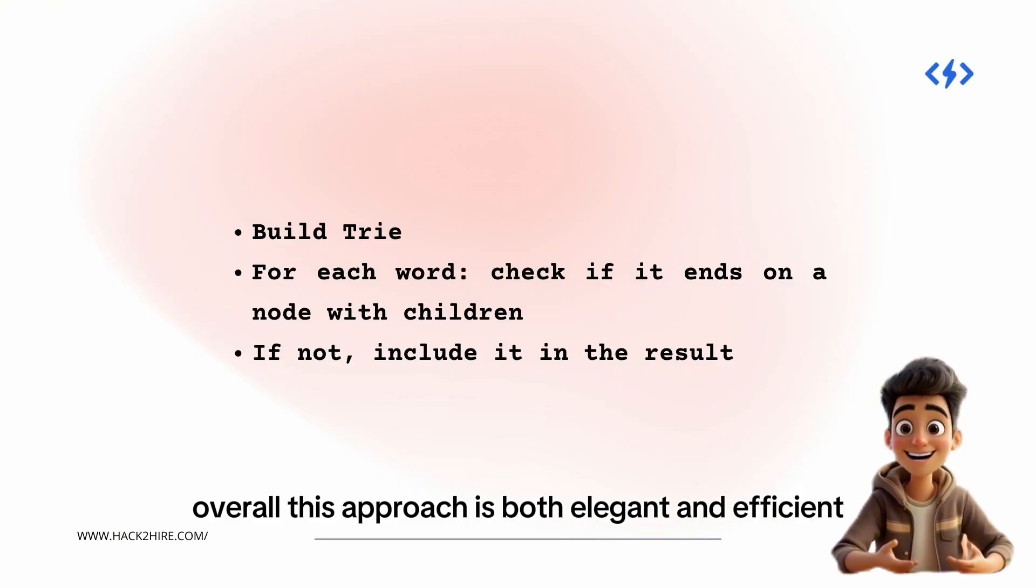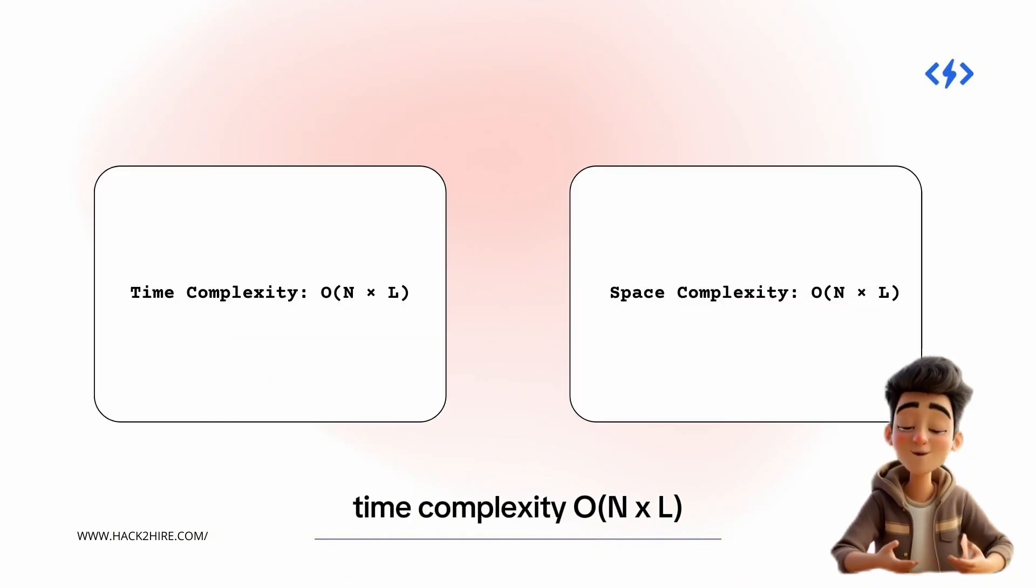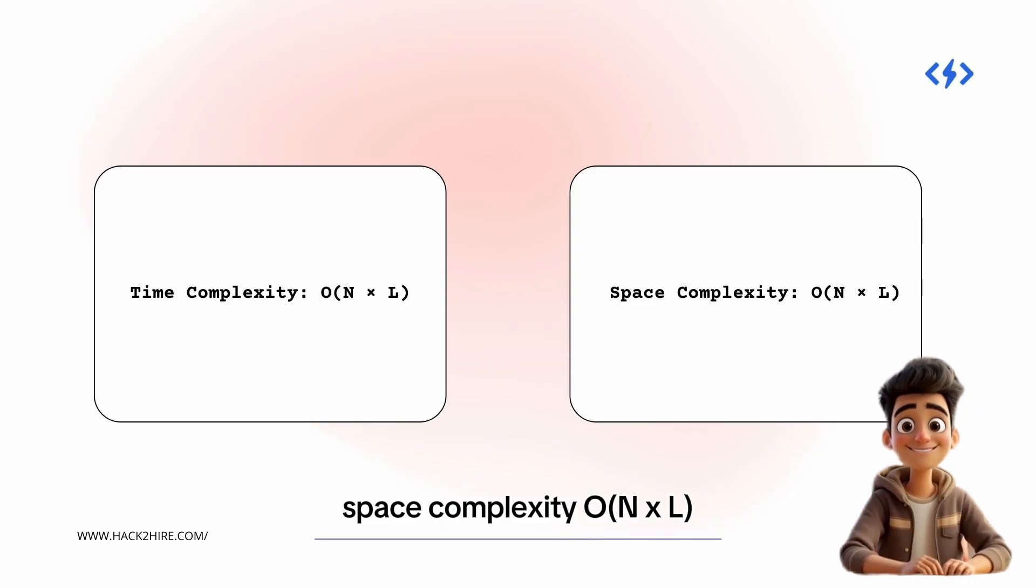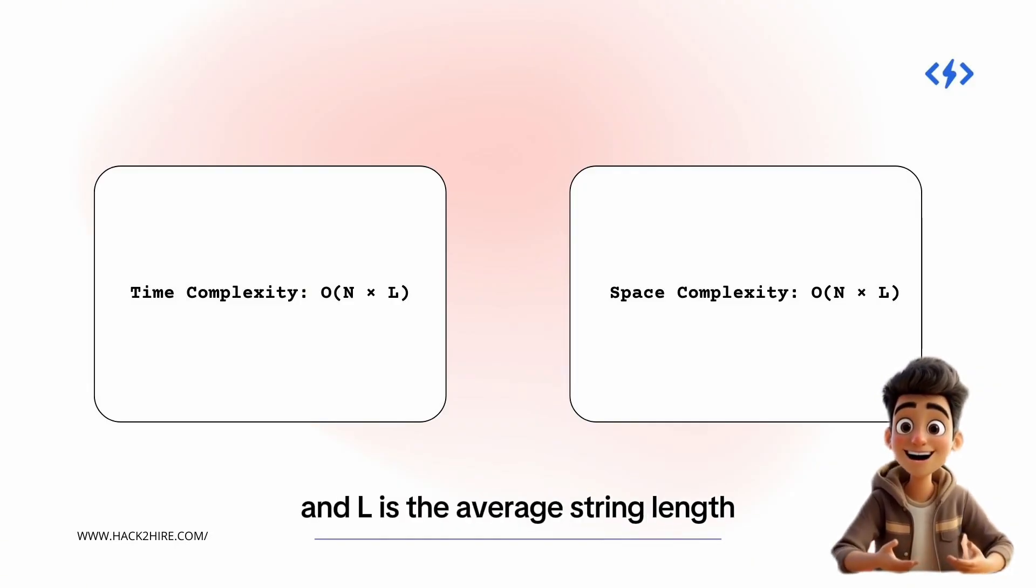Overall, this approach is both elegant and efficient, handling up to 10,000 strings smoothly. Time complexity: Big O of N times L. Space complexity: Big O of N times L, where N is the number of strings and L is the average string length.